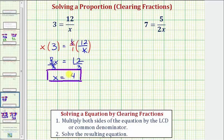And we can easily check this solution by substituting four into the original equation. We would have three equals 12 divided by x, which is four. 12 divided by four is three. So our solution checks.